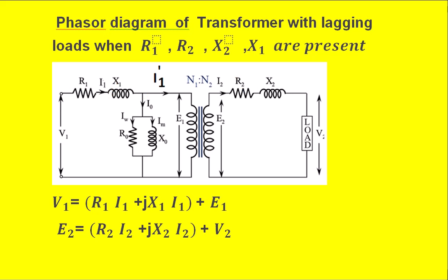Hello friends, today I will discuss the phasor diagram of transformer with lagging loads when R1, R2, X2, X1 are present — that is when the leakage reactances of the primary and secondary windings are taken into account, in addition to the resistance of primary and secondary windings.